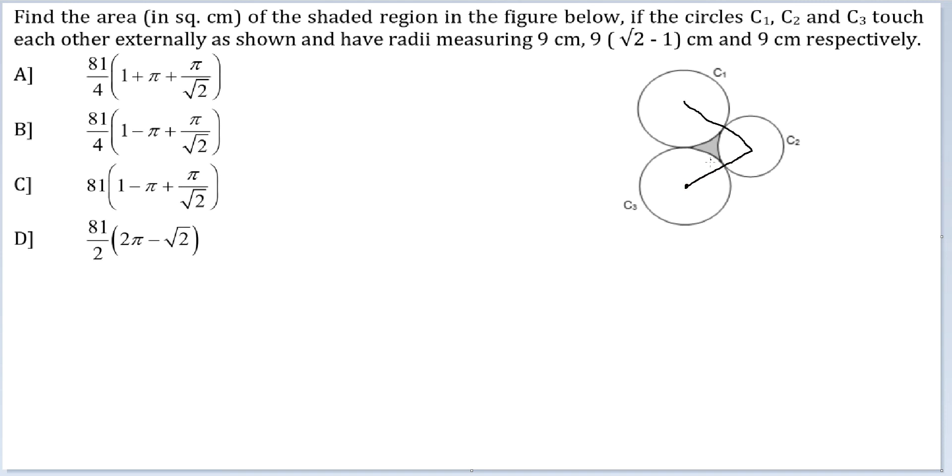I am joining the centers of these circles here, here and here. Can you see that this length is 18, this length is 9 root 2 and this length is 9 root 2 which effectively means this is 90 degrees, this is 45 degrees and this is 45 degrees.